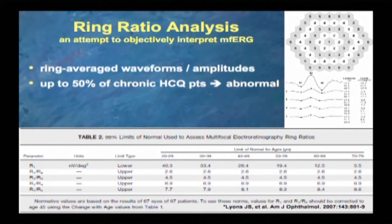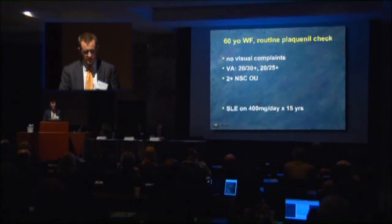Although amplitudes generally decrease with age — 40 for ages 20–29, down to 12.5 and 5.5 by age 60–70 — the ratios between the first segment and the inner rings remain the same. The ratio of one to three is 4.5 throughout life, which can be helpful when other test results are equivocal.